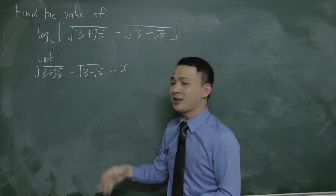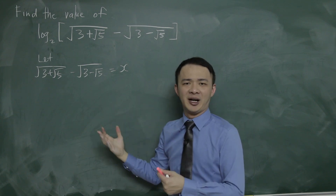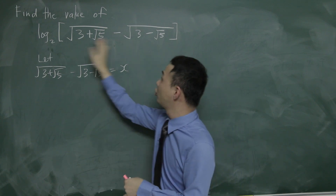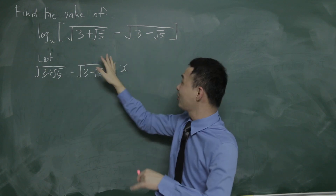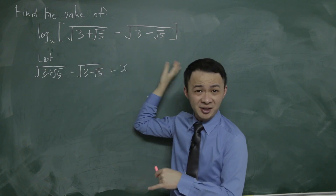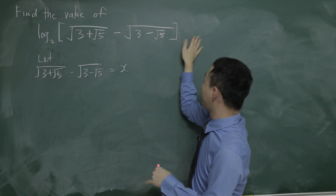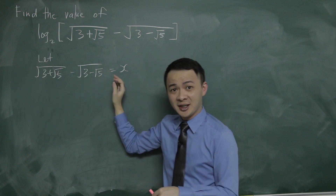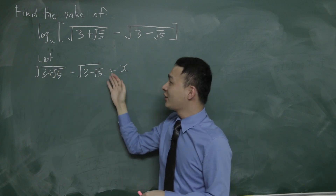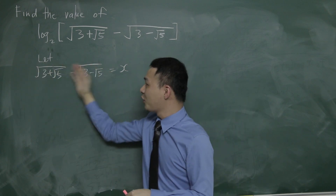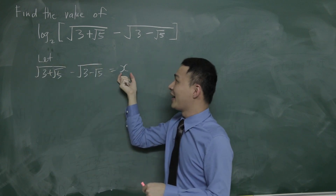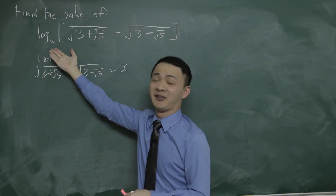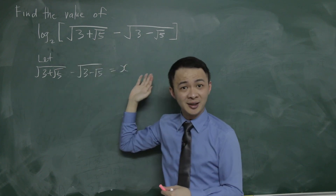If I have the equation, then I can manipulate it however I like. Before substitution, this is just an expression — there's no equal sign. So I'll use this method first, solve for x, then substitute x back to get the final value.